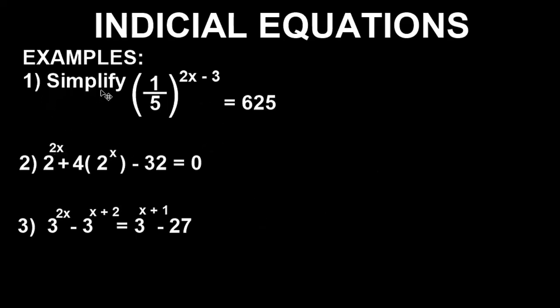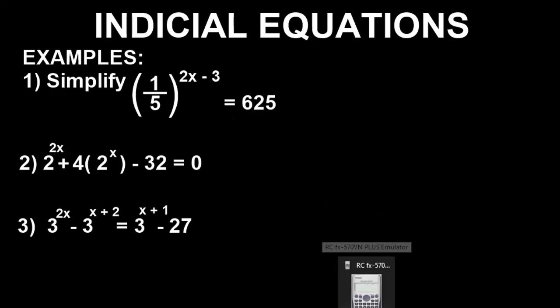Example 1 says: simplify this equation — (1/5) to the power of (2x minus 3) equals 625. Let's bring up the Casio calculator and solve the problem together.